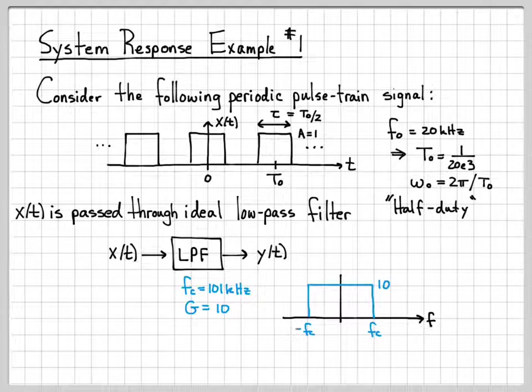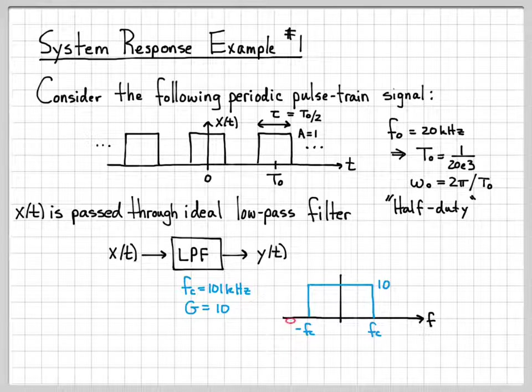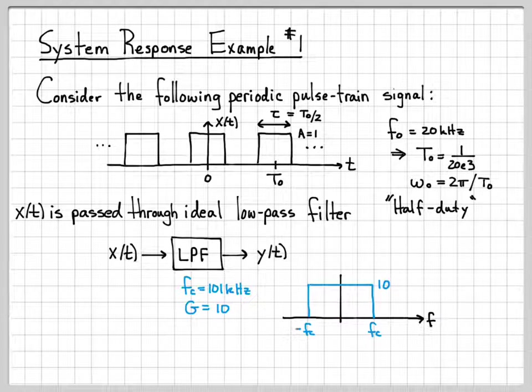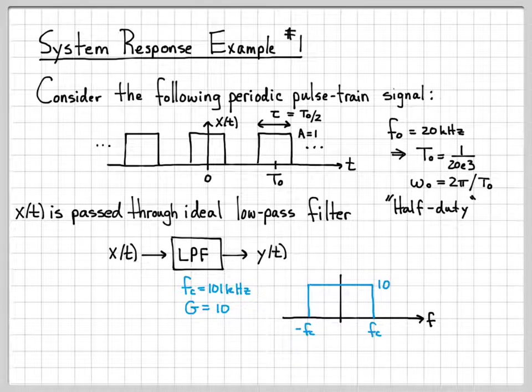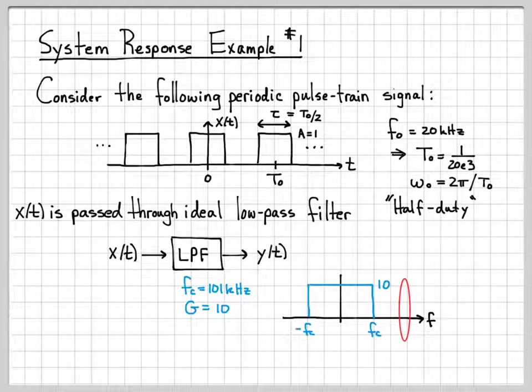So what these numbers mean, these are basically frequency domain characterizations of this linear system. What it means is that in the frequency domain, any signals between minus fc and fc come through the system, and they actually get multiplied by a gain of 10. So if I was to put in a cosine at, say, 5 kilohertz into this system, that exact cosine would come out, but its amplitude will have been multiplied by a factor of 10. If I was to put in a cosine at a frequency outside the cutoff frequency, say maybe I put in something with a frequency of 150 kilohertz,